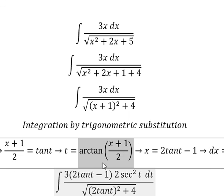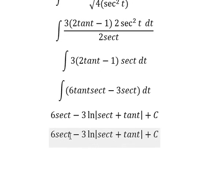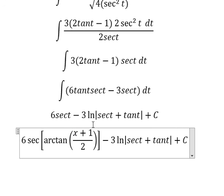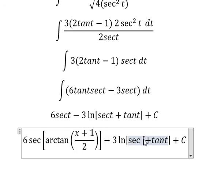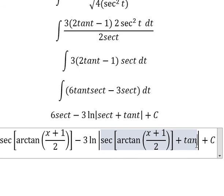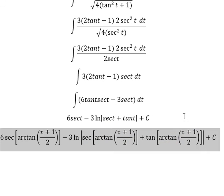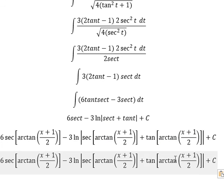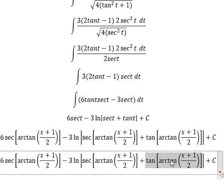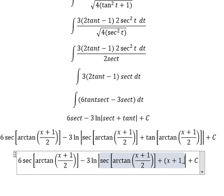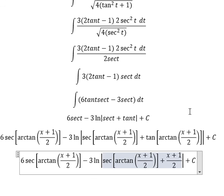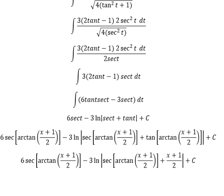We have t equal to arctan of x plus one over two. So we substitute this back in to replace t. Tan with arctan gives us x plus one over two. This is the end, thank you for watching.